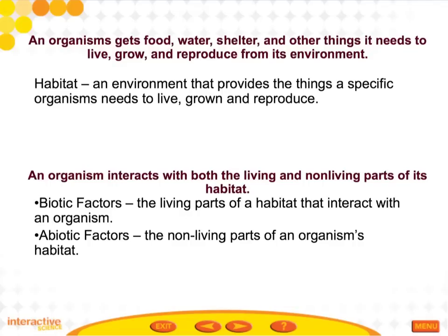The first vocab word is a habitat. This is the environment that provides the things that a specific organism needs to live, grow, and reproduce. Not every organism's habitat is going to be the same — some habitats get more sun than others, some more rain than others, but these are things that organism specifically needs in order to survive.